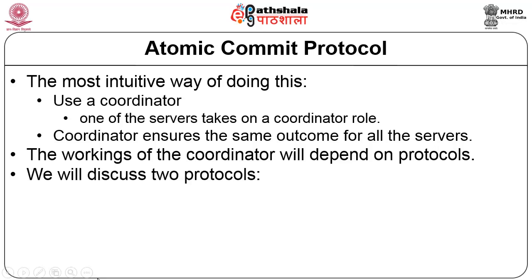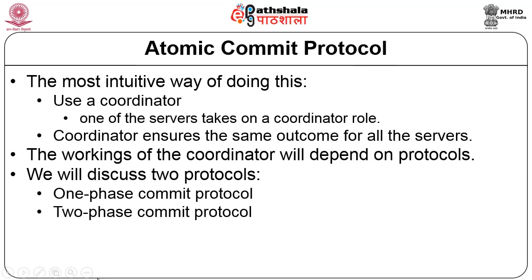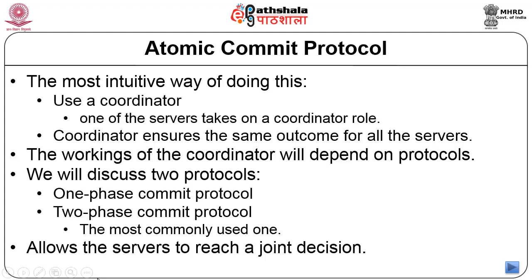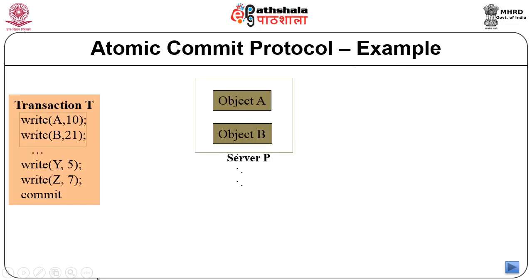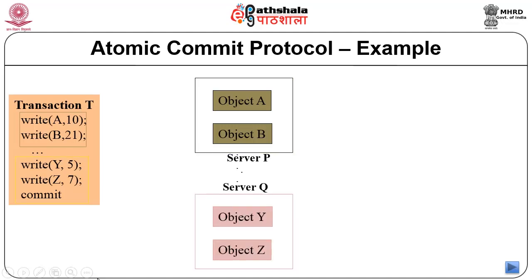We will have two protocols. One is called one-phase commit protocol and the next one is called two-phase commit protocol. Two-phase is the most commonly used protocol — it allows the servers to reach a joint decision. Here is an example transaction: write(a, 10), write(b, 20), write(y, 5), and write(z, 7). Let us quickly recapitulate what is a distributed transaction.